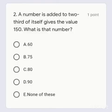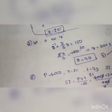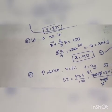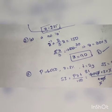Next, second question. A number is added to two-thirds of itself gives the value 150. What is that number? So let's say the number is x. x plus 2/3 of x equals 150.